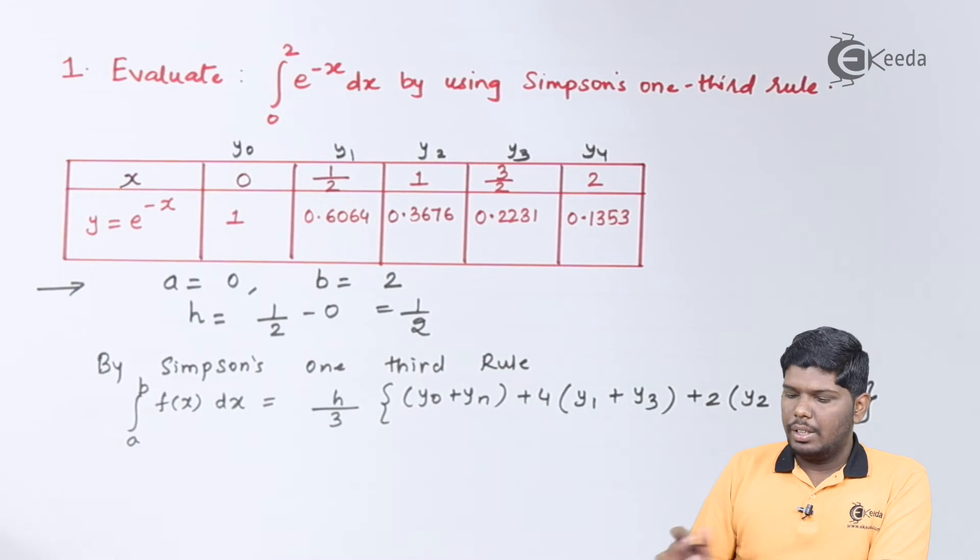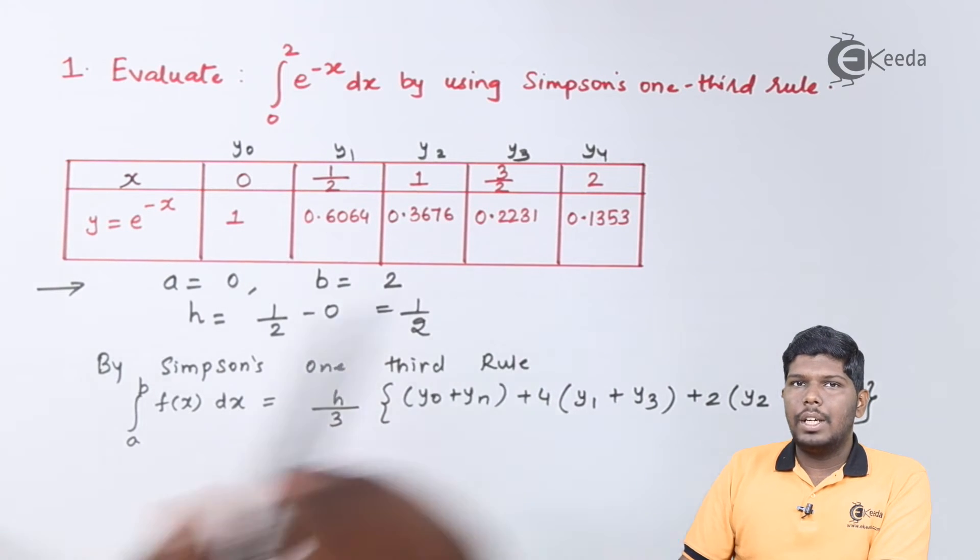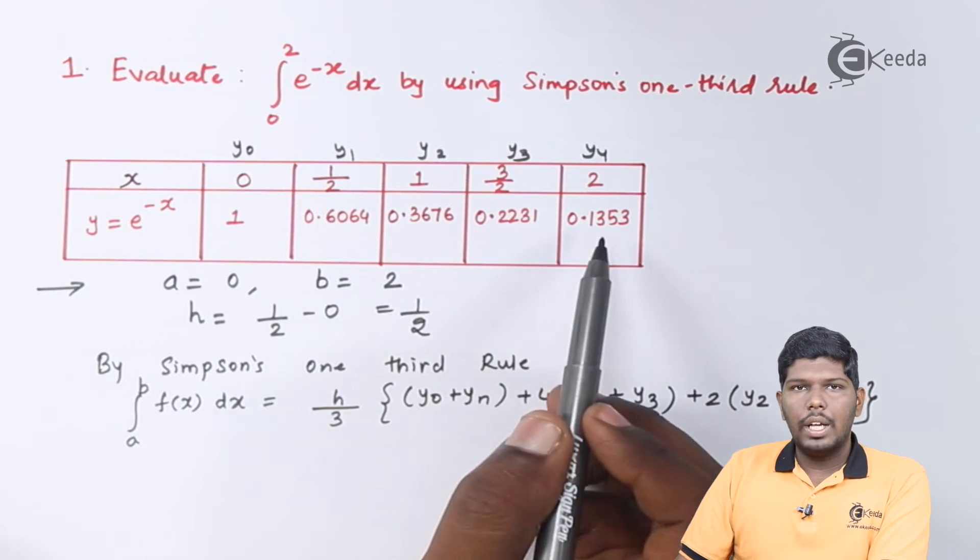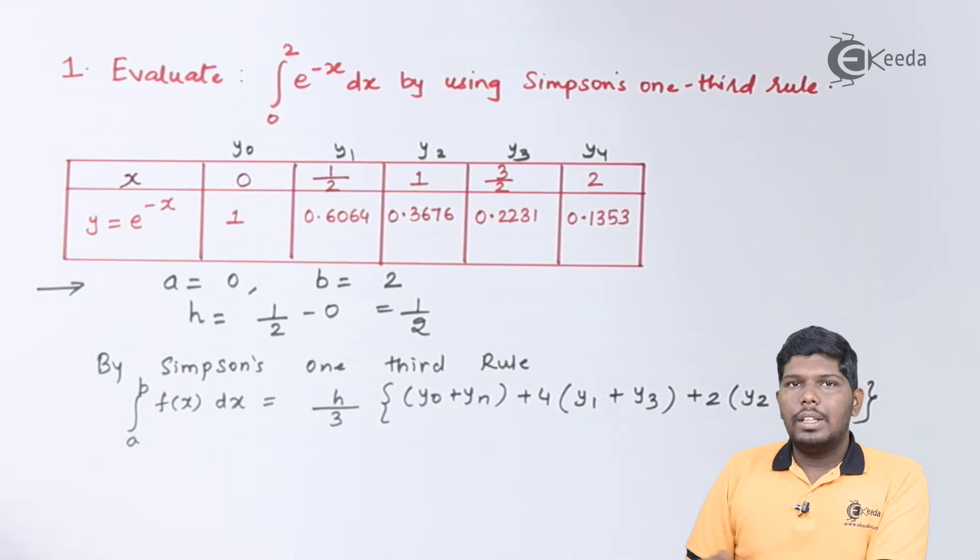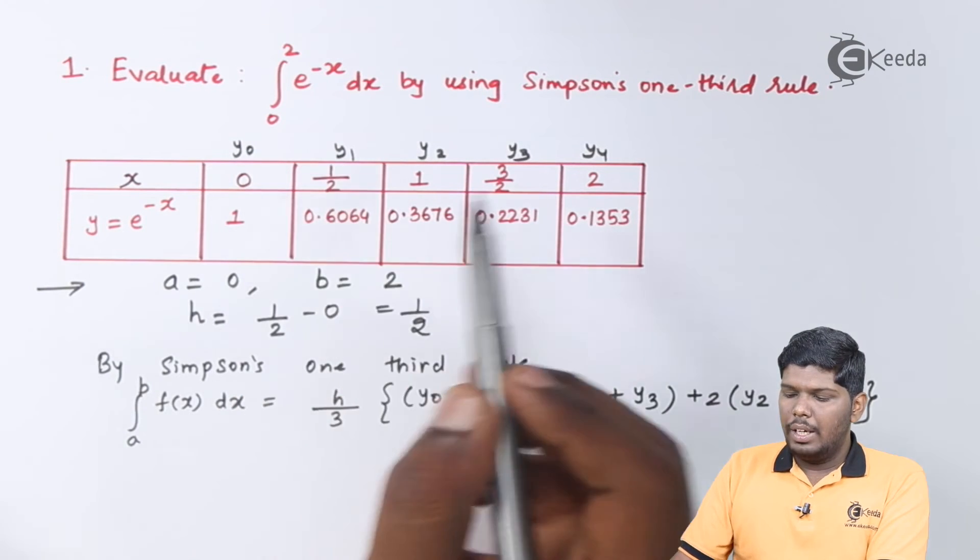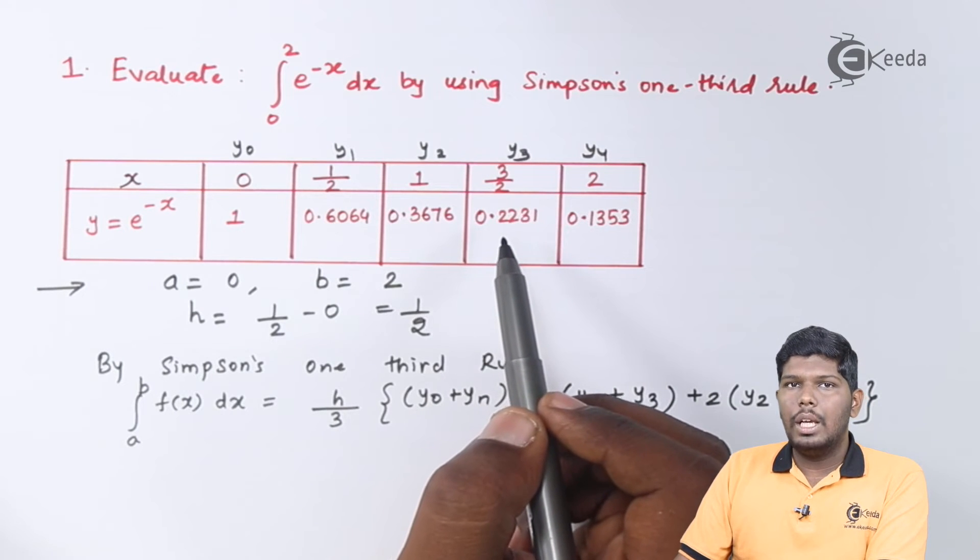So the numbers which are present on even position. If I say this is first position, second, third, fourth, and fifth, y₁ plus y₃ will represent the even position. If I say here we have 5 positions, out of that y₁ and y₃ are representing the even position.